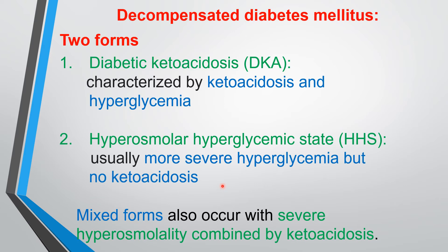Sometimes a mixed form of both DKA and HHS also occurs, and that is a more severe case. In this mixed form, there is severe hyperosmolality combined with ketoacidosis, making it a very serious condition.